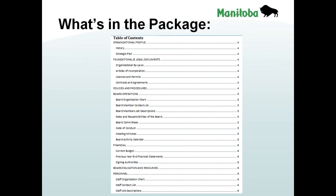When thinking about what's in an orientation package and pulling information together, think about what someone needs to know about your organization. Often there will be a table of contents, and the first section is an organizational profile — it tells people about the history of your organization and may include a strategic plan.